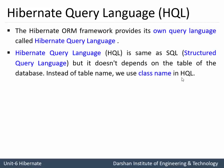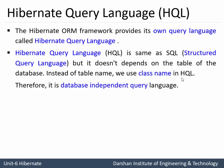In SQL, if we are writing 'select * from student', then student is a table name. While in HQL, if I am writing 'select * from student', then student is a type of object in my Java class. Therefore, HQL is a database independent query language.